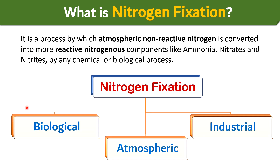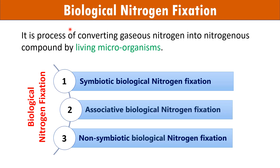Now let's see the different ways of nitrogen fixation. There are mainly three ways by which nitrogen fixation happens: biological nitrogen fixation, atmospheric nitrogen fixation, and industrial nitrogen fixation. Let's understand them in detail.